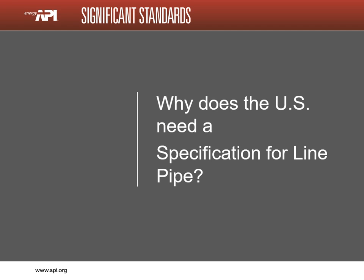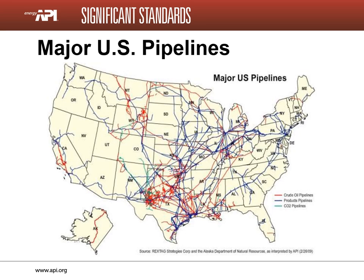So, why do we need a specification for line pipe? This slide shows the major US pipelines that stretch across the country. The color legend describes the purpose for each pipeline. Red denotes crude oil, blue denotes products, and green denotes CO2.